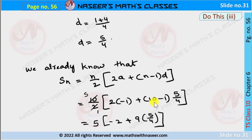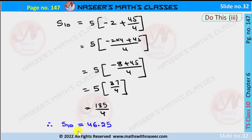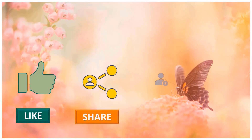Since 10−1 = 9 and 2×(−1) = −2, we write S₁₀ = 5 × (−2 + 45/4). Taking LCM of 4, the numerator becomes −2×4 + 45 = −8 + 45 = 37, giving 5 × (37/4). Multiplying 5×37 = 185, so S₁₀ = 185/4 = 46.25. Therefore the sum of 10 terms of the given series is 46.25.